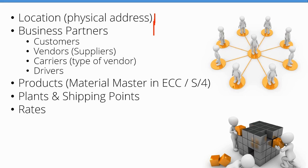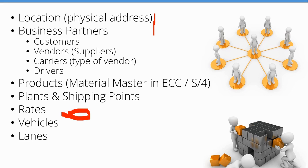Freight rates are very important master data in TM. Vehicles can be your own trucks, shipping containers — the actual items you use to ship things. We're going to talk about lanes, how TM can allow you to get your products from here to there, and then some geographic attributes: zones and zone hierarchy.